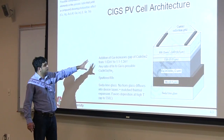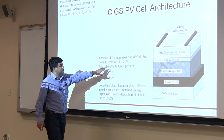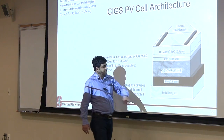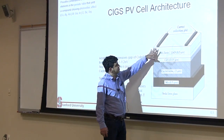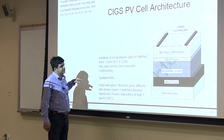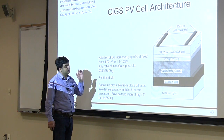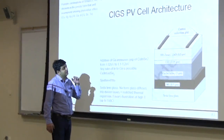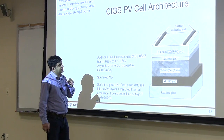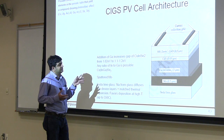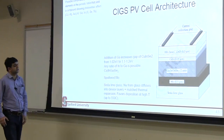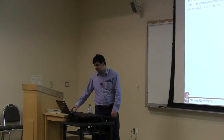CIGS cells are made in a very similar way — you start with glass, deposit the CIGS layer, then have cadmium sulfide on the top, and then another TCO on top. You could make these on glass, on sheets of metal, or even on flexible materials. There are many startups in the CIGS space, each with a unique process and a unique starting material to make the CIGS layers.